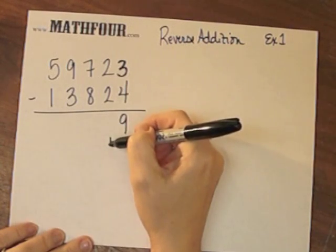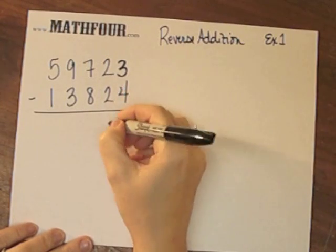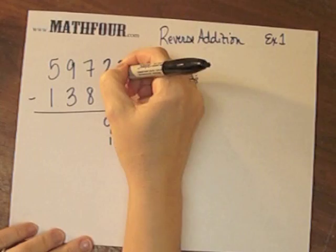2 plus 1 plus what gives me 2 or 12? Well, 2 plus 1 plus 9 gives me 12, carry the 1.